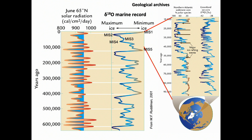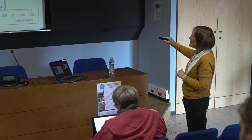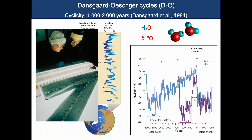Also, during some of the cold phases found in Greenland, we find major ice rafting events. In this core in front of Ireland, there were layers characterized by very coarse sediment. This variability in Greenland was identified by Dansgaard and Oeschger — for this reason we call them Dansgaard-Oeschger cycles. The variability is between 1,000 and 2,000 years.